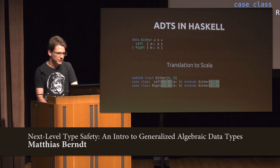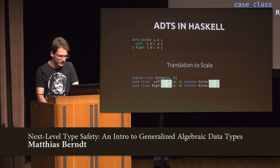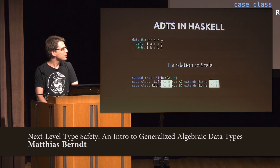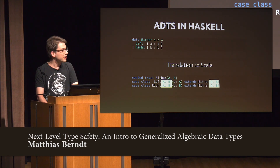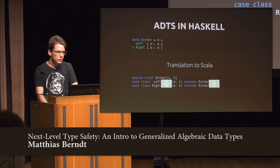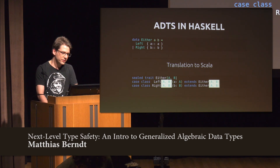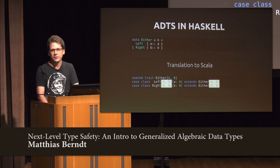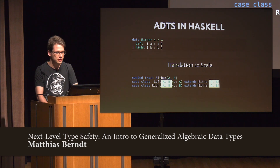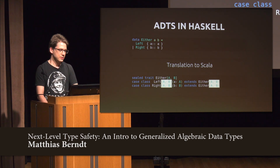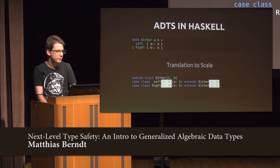There's one essential difference, and it's these type parameter lists. In the Haskell example, you don't have type parameter lists for the individual constructors — only for the data type itself. What Haskell does is assume that constructors take the same type parameters as the algebraic data type. In Scala, we emulate that by making it explicit: declaring it with the same parameter list and forwarding those type parameters.